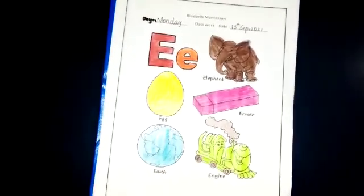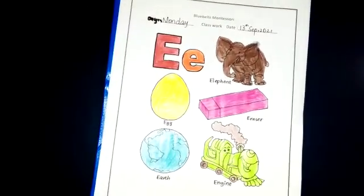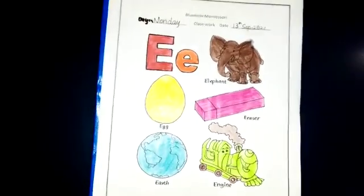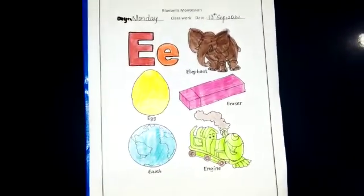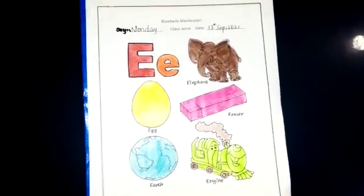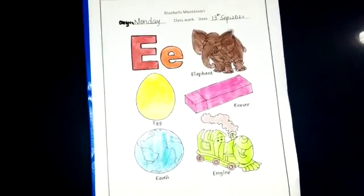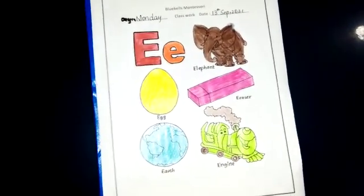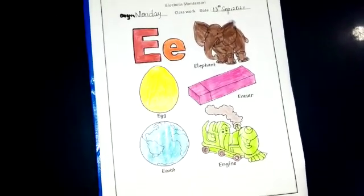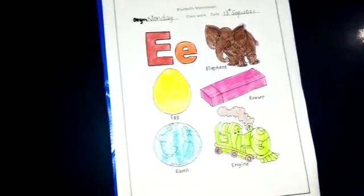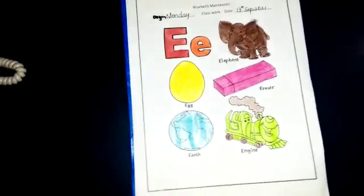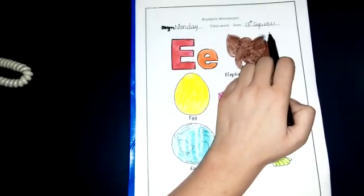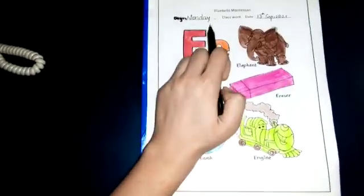Assalamualaikum, this is class PG. How are you all? I hope you are all fine. Today is your English lecture. Okay, two worksheets right now. Before you start your work, write Bismillah and Tasmiyah, okay? Mention the date and day on the top of the page. What is the date today? 13 September 2021. And what is the day today? Monday.